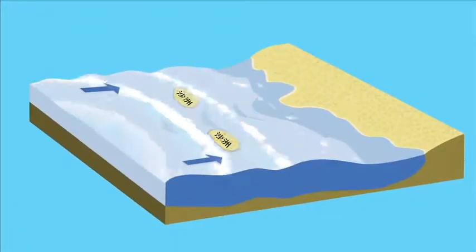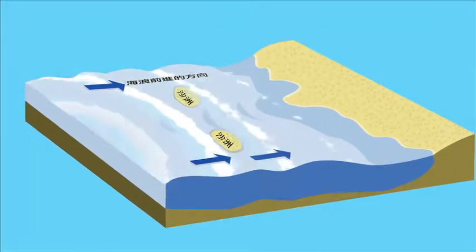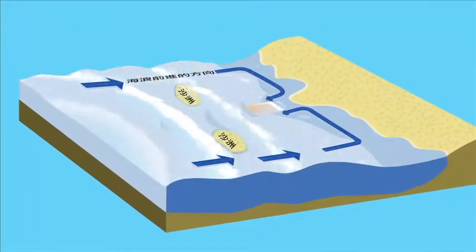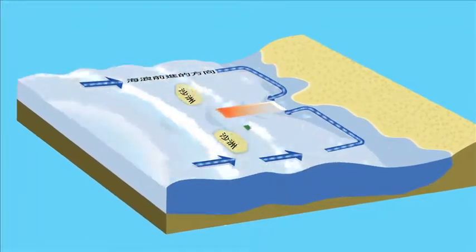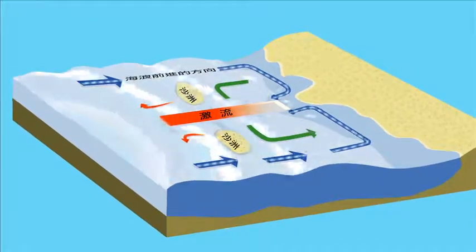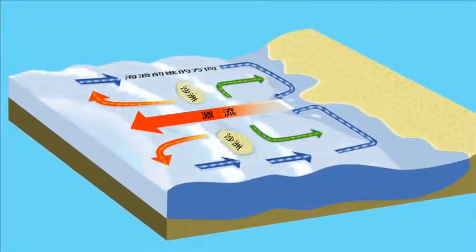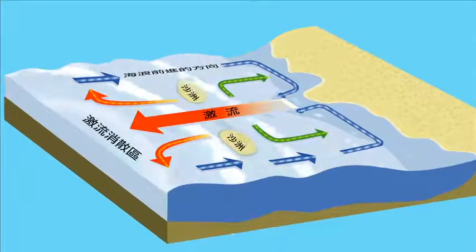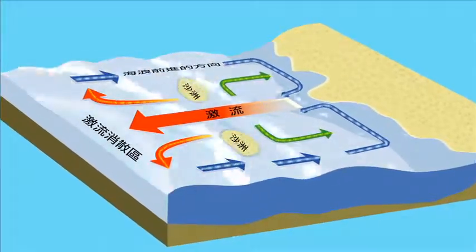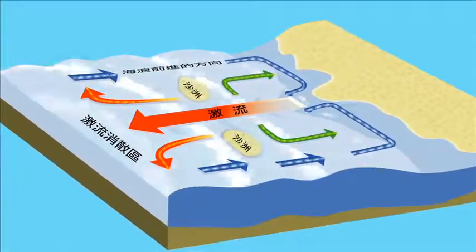你可以计划在潜水过程中逆流而游，或计划在下游某处出水。有时波浪打上岸会遇到障碍物，阻碍海水从底部流回海中。当这种情况发生时，水会通过一处狭窄的缺口流回海中，通过缺口后，水的流速会逐渐减缓，这称为激流。